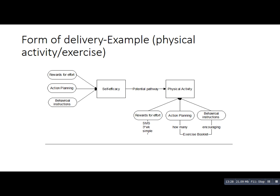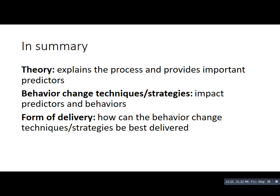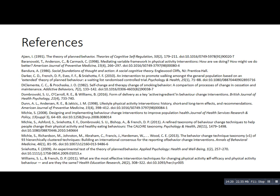In summary, theory is the starting point of any behavior change intervention — it explains the process and provides important predictors and constructs to consider. Behavior change techniques and strategies are the active ingredients that actually impact those predictors and behaviors. Finally, we need to think carefully about how these techniques can be best delivered: by SMS, face to face, or a mixture? How often? Should it be simple or more complex? I hope this was a useful overview. There are references included if you would like to read further. Thank you.